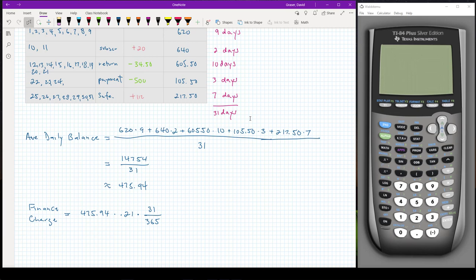When I put that into my calculator and work it out, so 475.94 times 0.21 times 31 divided by 365, so I get 8.4886, rounded to the nearest penny that's $8.49. So that would be the finance charge corresponding to the January bill.